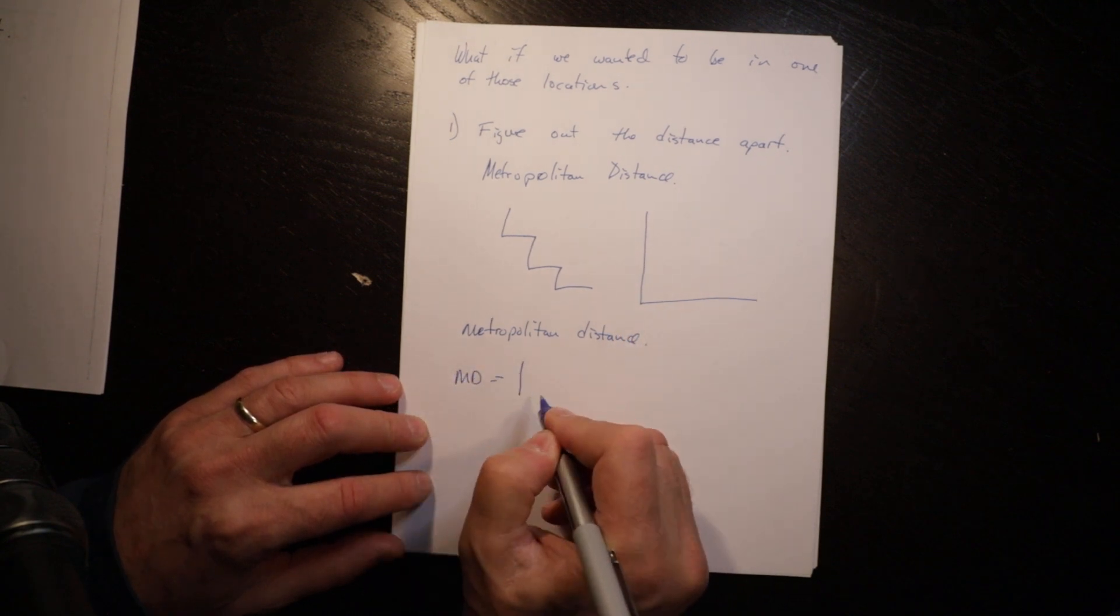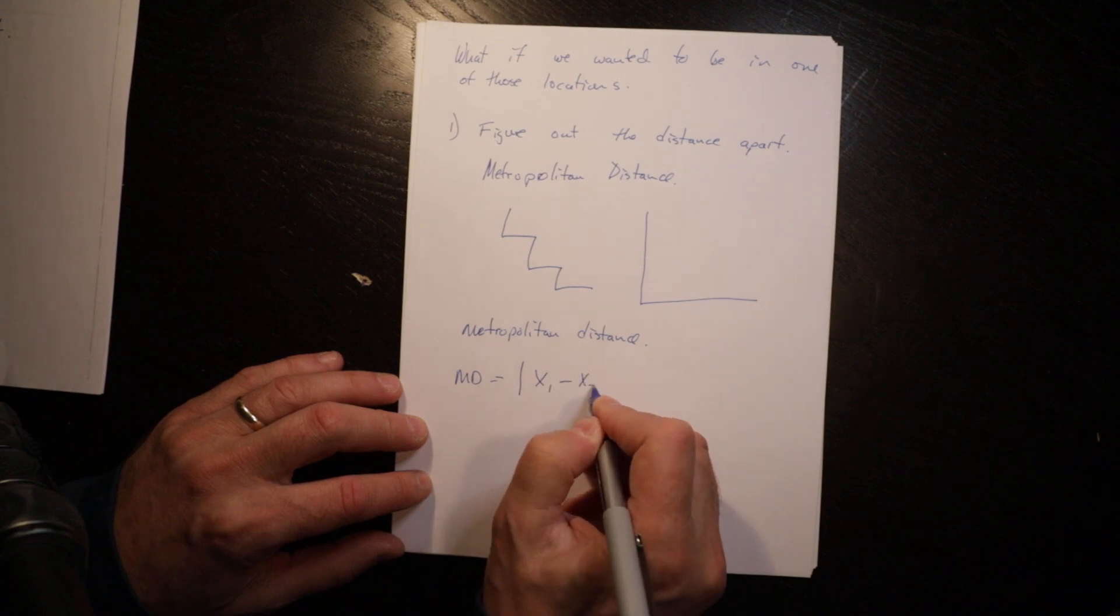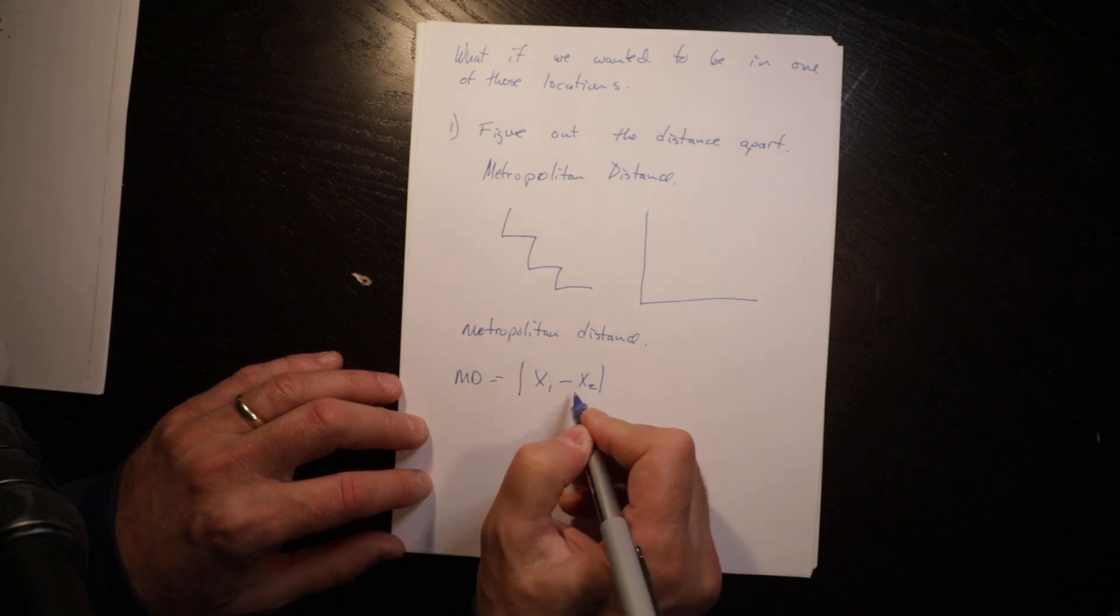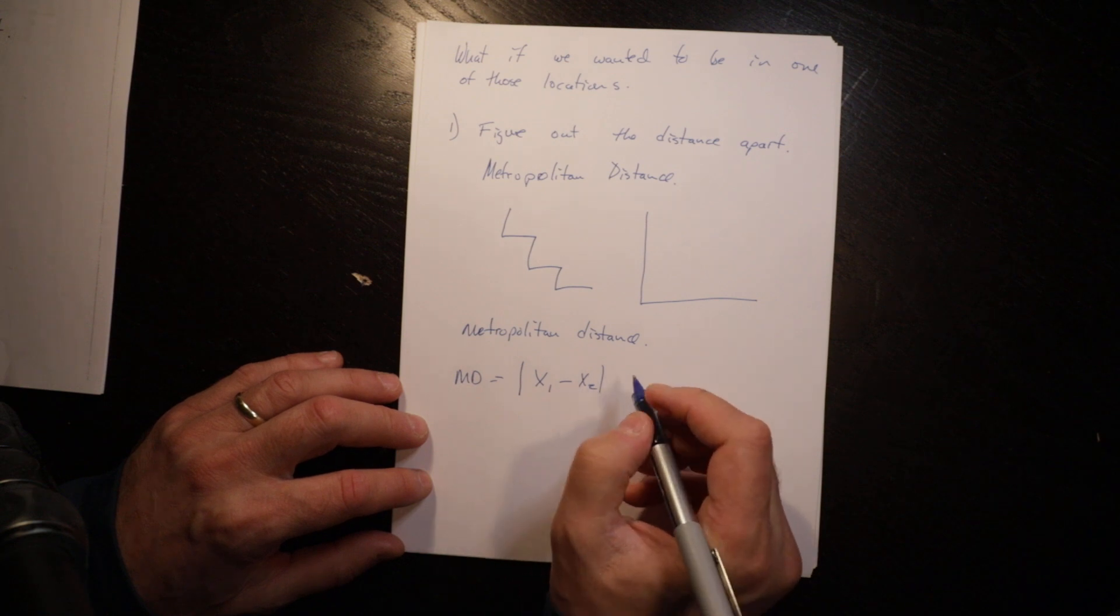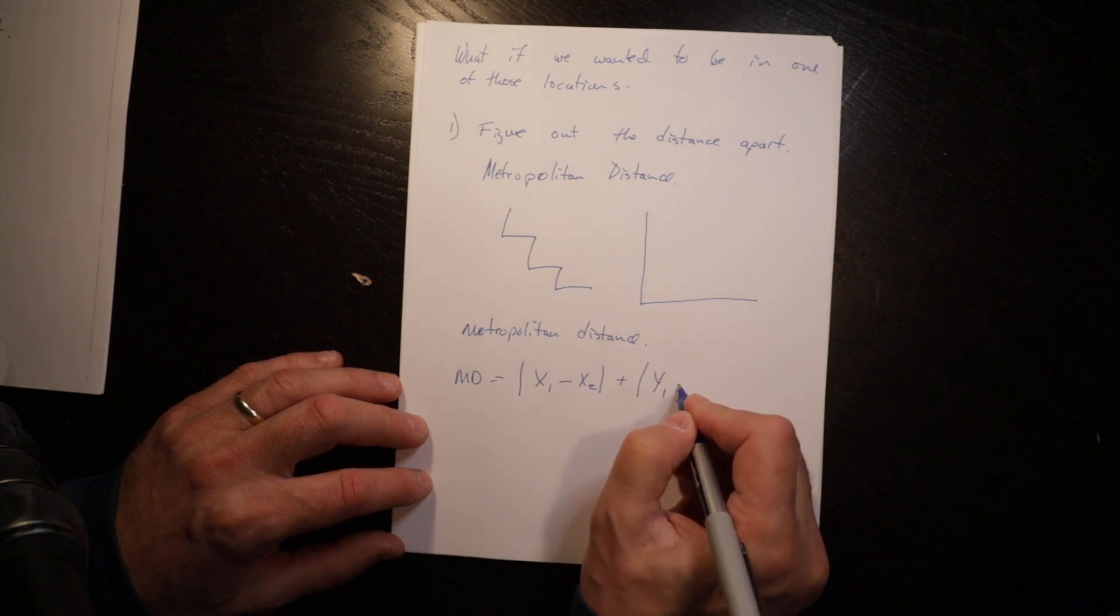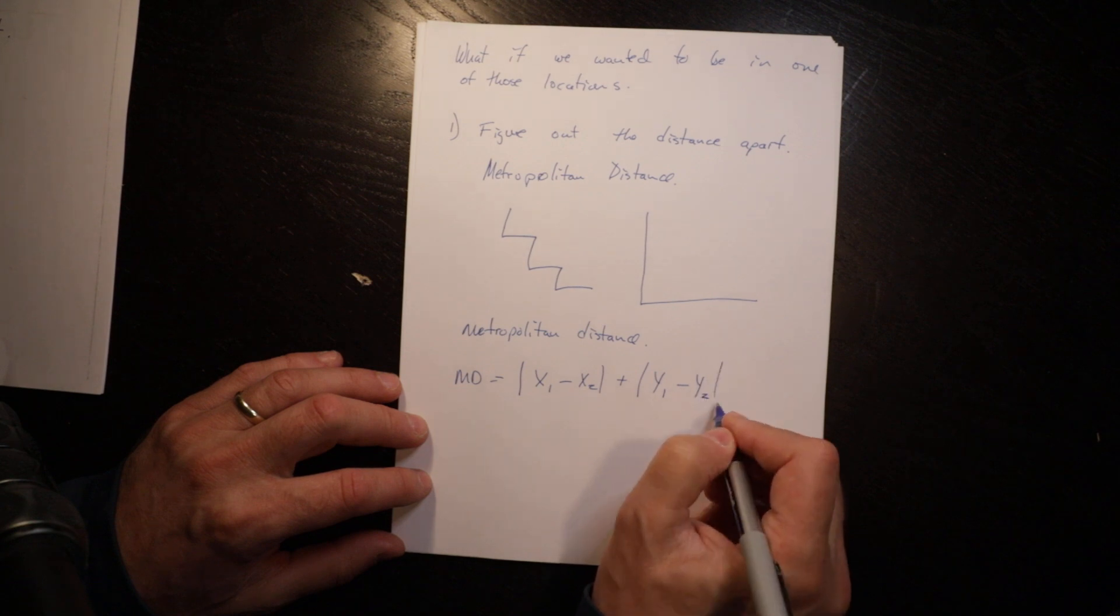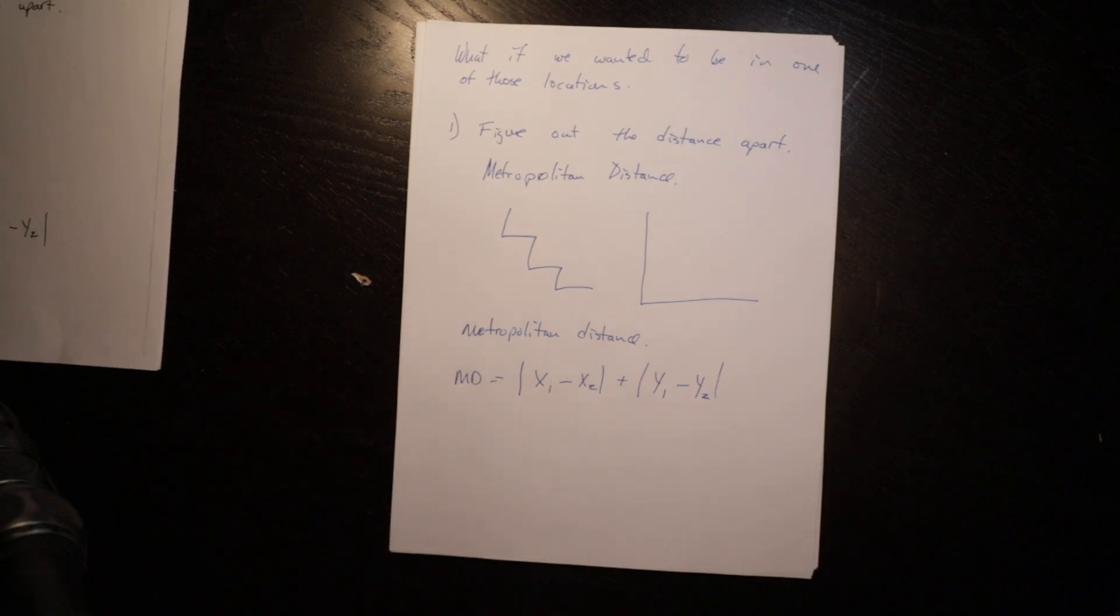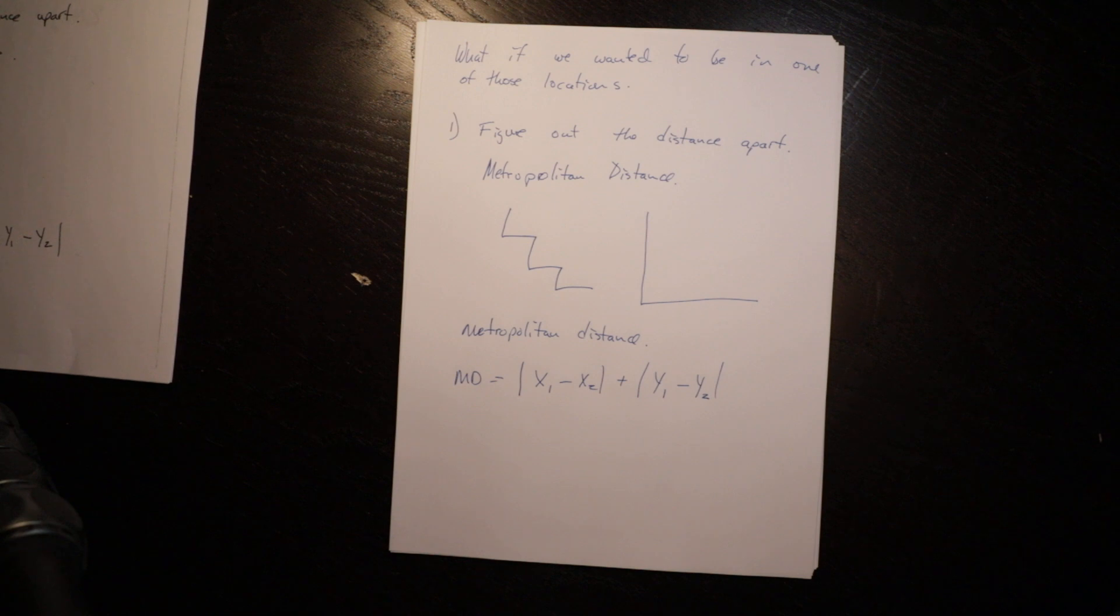To calculate the metropolitan distance it's the absolute value of X1 minus X2, or if you don't want to do the absolute value you just subtract the smallest one from the biggest one, plus the absolute value of the difference between the two Y's. So that's relatively straightforward.